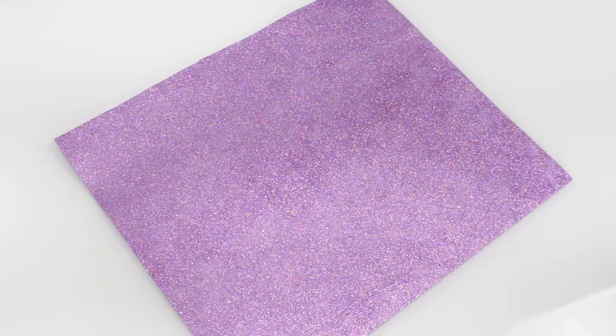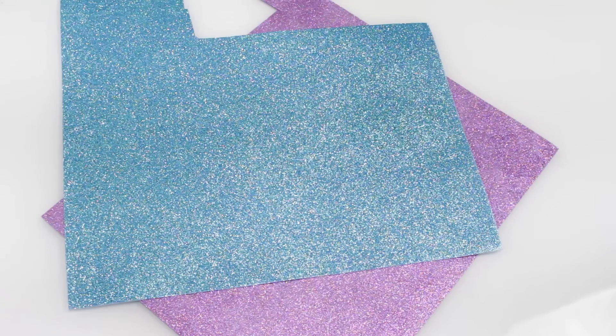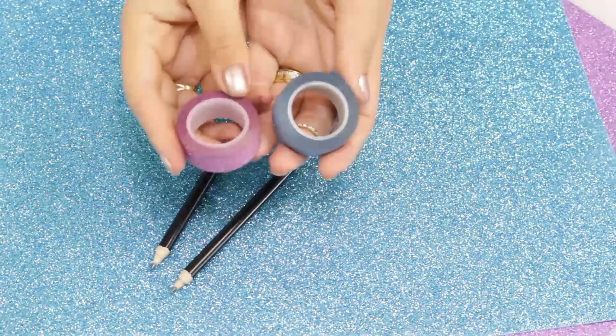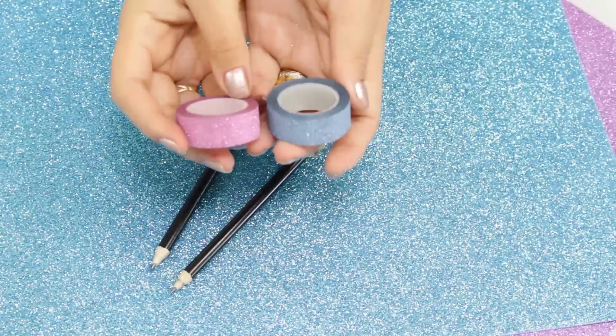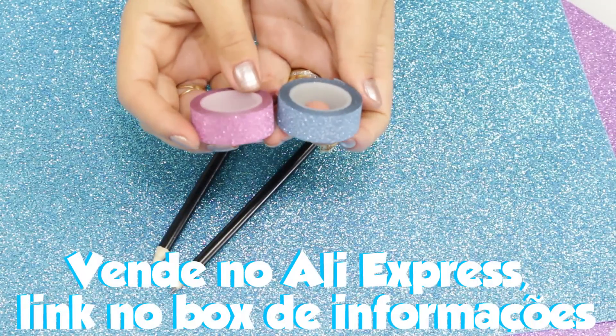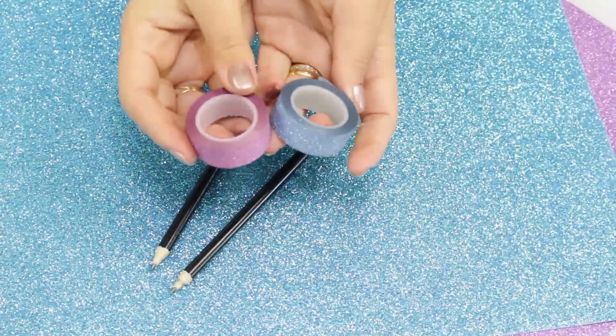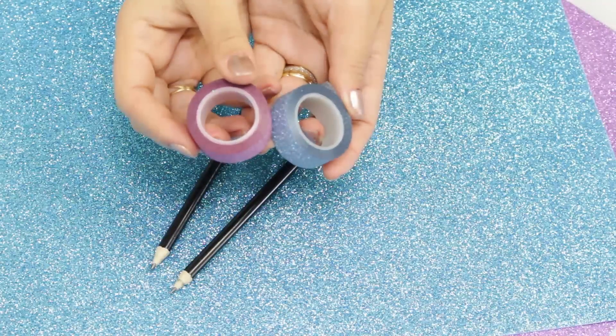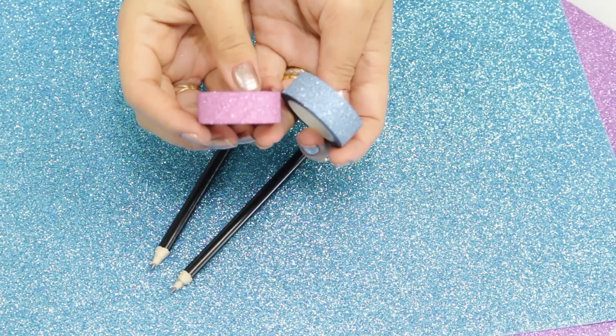E pra fazer o nosso lápis de sereia, nós vamos precisar dos mesmos EVAs na cor azul e lilás, de lápis, de fitas decorativas. Eu consegui encontrar um azul super parecido e um rosa bem próximo do lilás também com brilhos. Se você conseguir pegar bem igualzinho, fica melhor. Se não, qualquer fita adesiva decorativa que você tiver já funciona. De tesoura e cola quente.